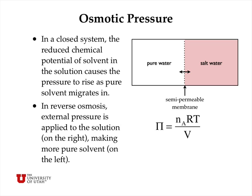Now we turn to osmotic pressure. In a closed system, the reduced chemical potential of the solvent in the solution on the right-hand side causes the pressure to rise as pure solvent migrates in. The water wants to have the same chemical potential on the left as on the right, but the only way it can do that is to increase the pressure on the right. That osmotic pressure is equal to the number of moles of solute times R times T divided by the volume — so n/V is the concentration in moles per liter — and pi equals nRT/V, which looks like the ideal gas equation, but we're concerned with osmotic pressure rather than the partial pressure of a gas.